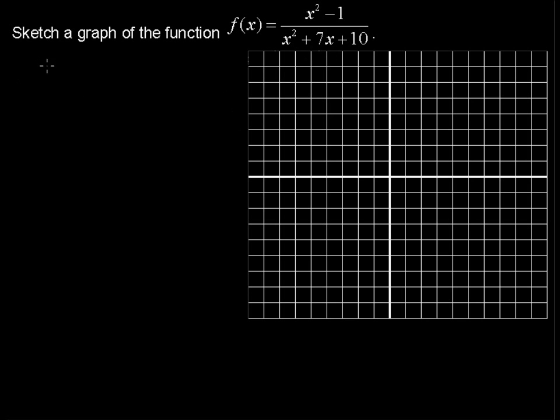First, let's take a look at the vertical and horizontal asymptotes. The vertical asymptotes are when the denominator equals 0.